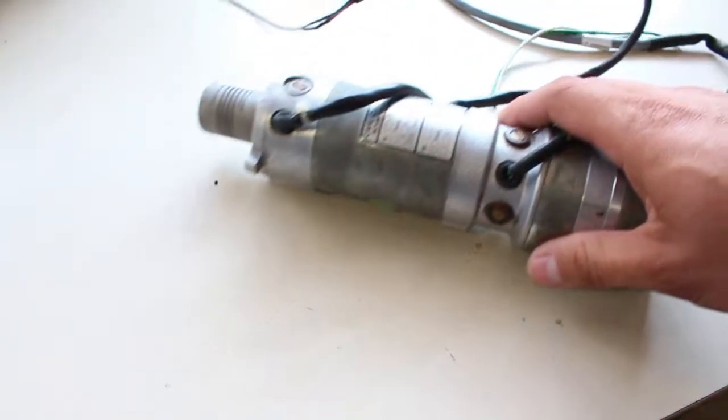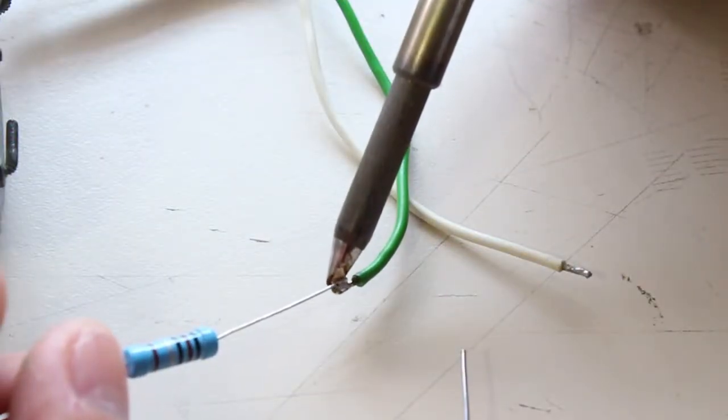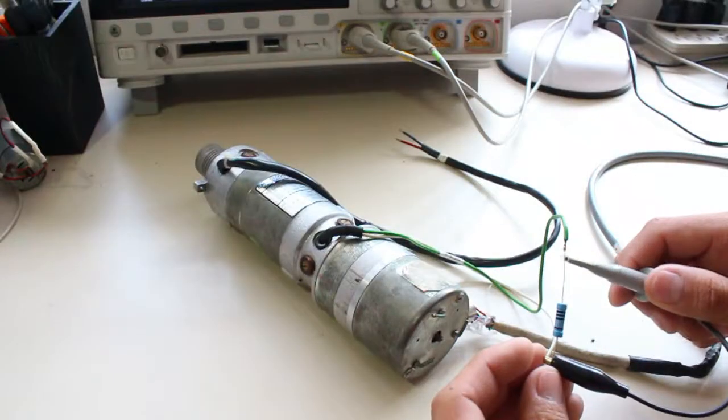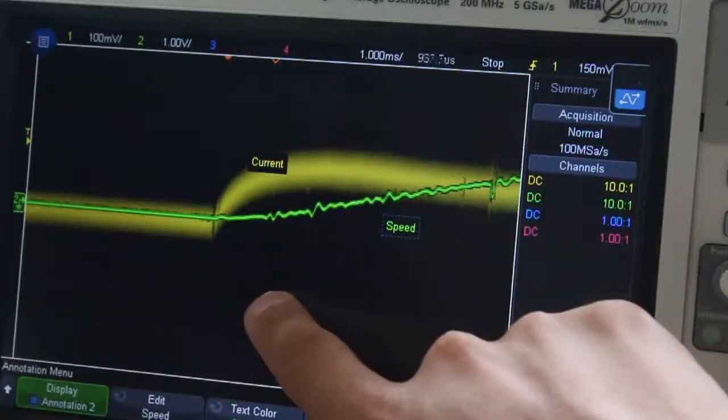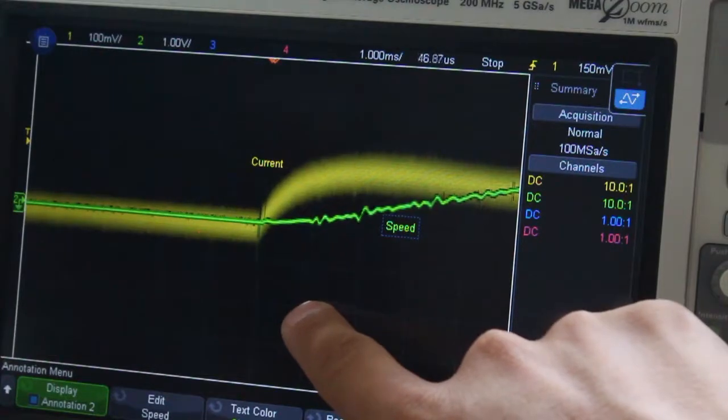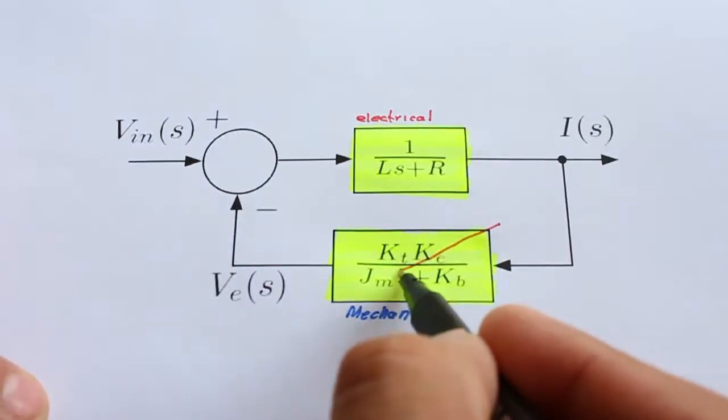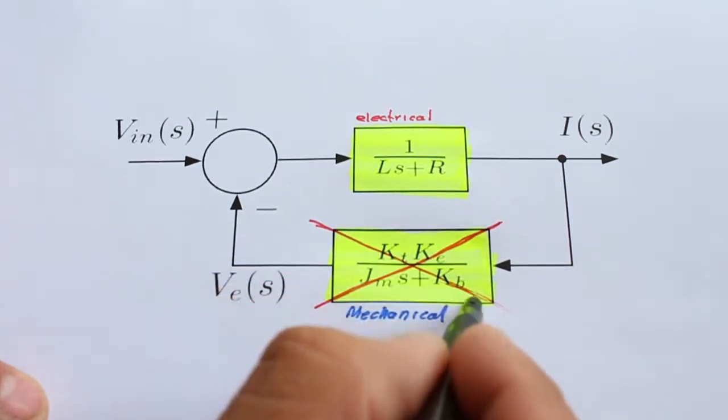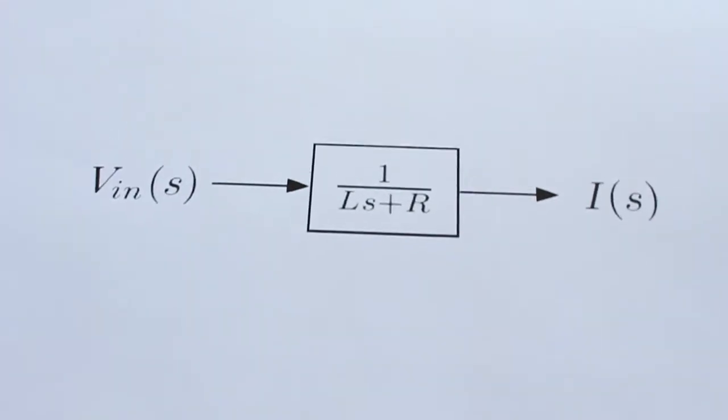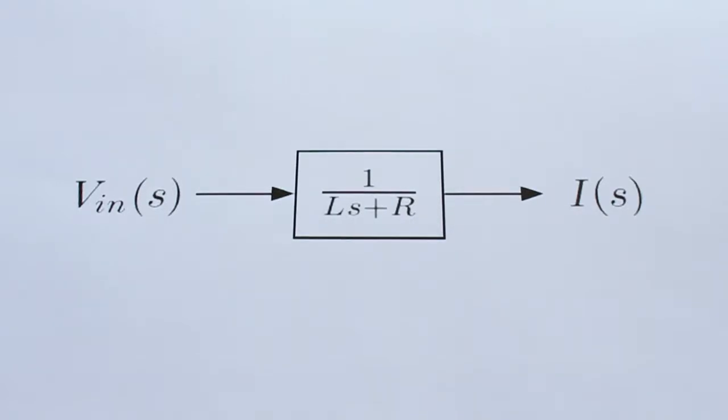If we connect a shunt resistor in series with the motor to measure its current, and by connecting an oscilloscope to the tachometer, it is possible to realize that the current changes much faster than velocity. Therefore, the block in the feedback path may be considered as a disturbance in steady state and it will be ignored for controller tuning purposes.